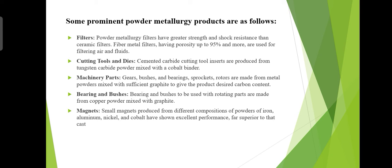Machinery parts such as gears, bushes, bearings, and rotors are made from powder mixed with sufficient graphite to give the product the desired carbon content.